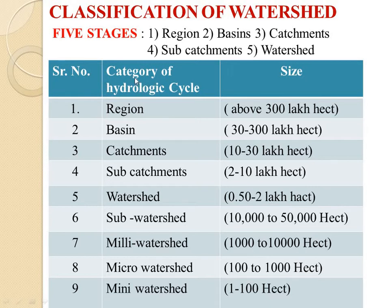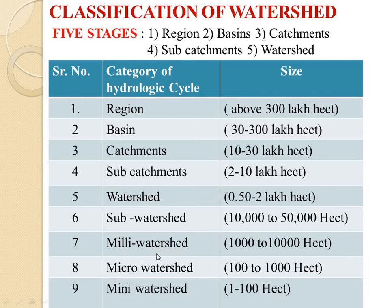The categories of hydrologic cycle over sizes are: number 1, region — above 300 lakh hectares; second, basin — 30 to 300 lakh hectares; third, catchmates — 10 to 30 lakh hectares; fourth, subcatchmates — 2 to 10 lakh hectares; fifth, watershed — 0.50 to 2 lakh hectares; sixth, subwatershed — 10,000 to 50,000 hectares; then milliwatershed — 1,000 to 10,000 hectares; microwatershed — 100 to 1,000 hectares; and miniwatershed — 1 to 100 hectares.